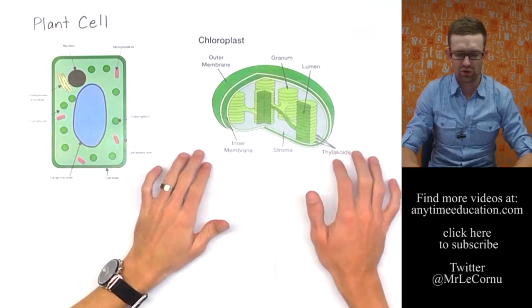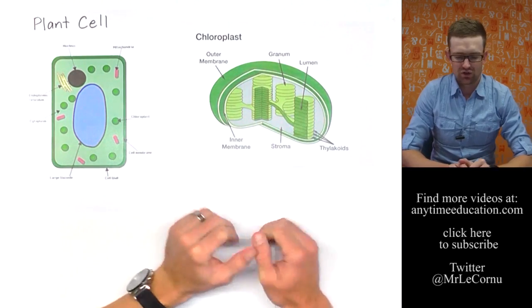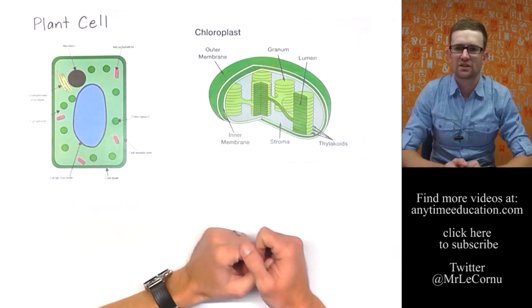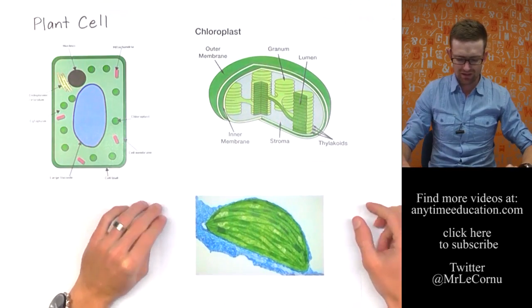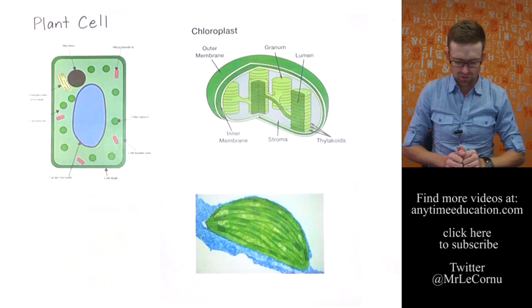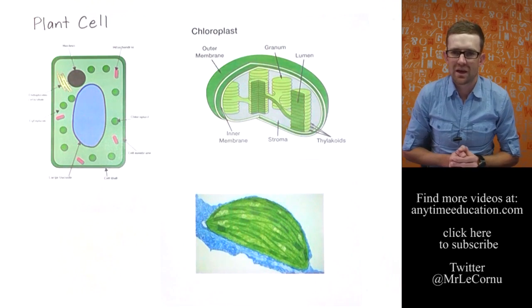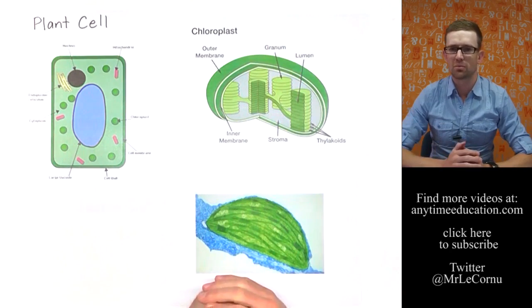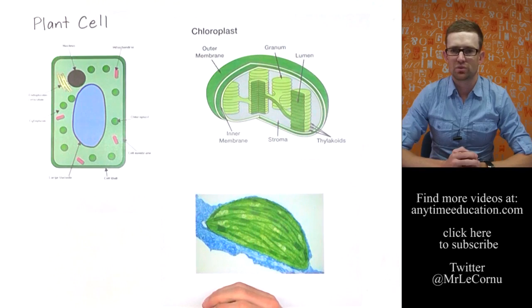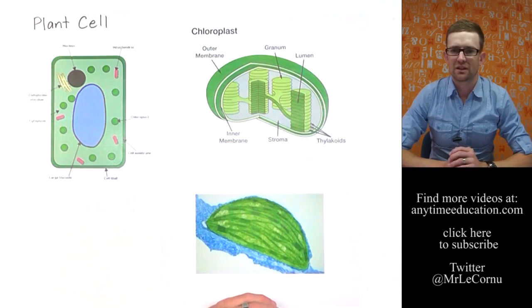Here's a more zoomed in diagram of a chloroplast and you can see its various structures. This is where photosynthesis takes place. Also we can have a look at a photomicrograph taken under an electron microscope of a chloroplast. This is what they actually look like. You notice that green colour. The green colour is coming from a photosynthetic pigment called chlorophyll. Chlorophyll is really important for trapping light energy to produce complex organic compounds.